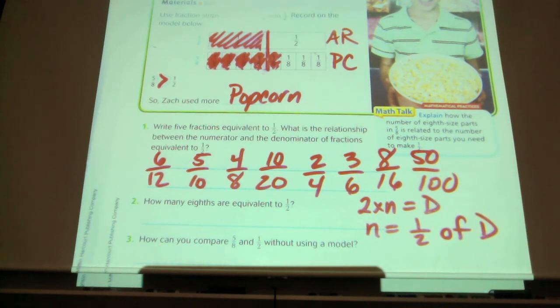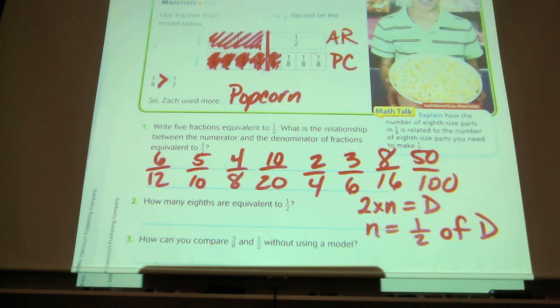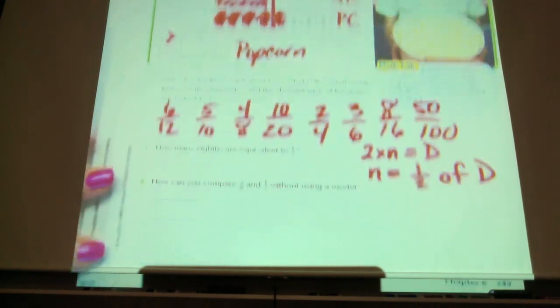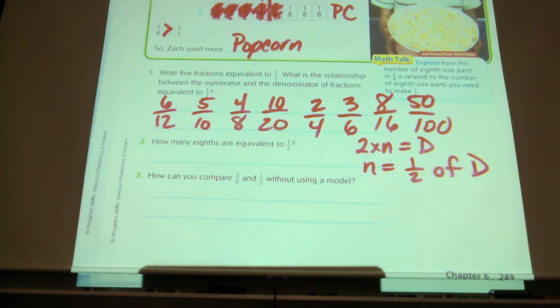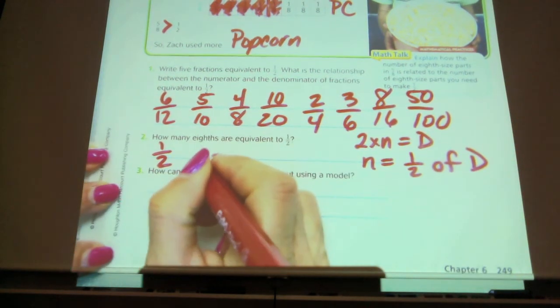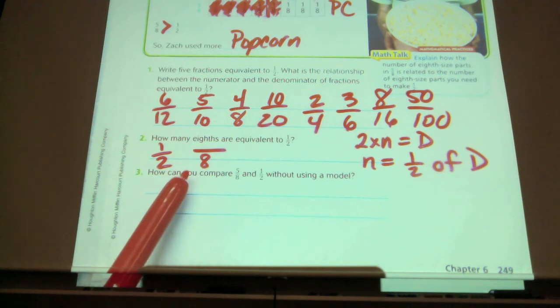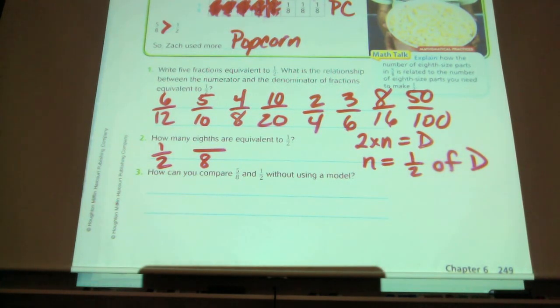So we can tell what fractions are equivalent to one-half by looking at, or by creating a numerator and denominator that have either one of these relationships. So when we're looking at comparing fractions, a lot of times we can think about how they compare to a half. So we're going on to number two. It says, how many eighths are equivalent to one-half? So what it's asking is, this is my fraction, I want to make an equivalent fraction that has an eighth as a denominator. I have a denominator that's eight, so I know that my numerator is going to equal one-half of that number. What is one-half of eight?